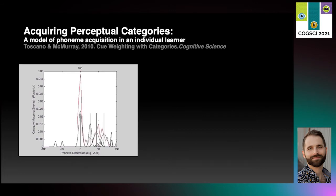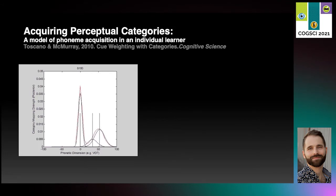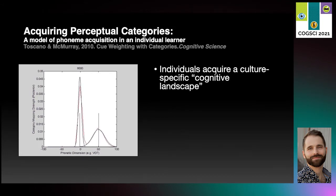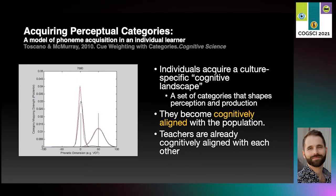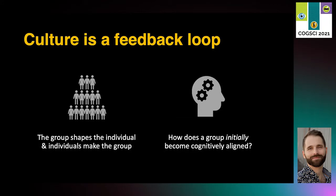We can see the model home in on the correct category structure for the voicing dimension in English, which has two categories. We can think of this process as individuals acquiring a culture-specific cognitive landscape, which can be described computationally as a set of categories that shape perception and production. In other words, individuals become cognitively aligned to their population. But importantly, treating this as an individual-level learning problem assumes that the teachers — the others in the population — are already cognitively aligned with each other. Culture is a feedback loop, and as individuals generate behaviors and artifacts, these shape the cognitive landscapes of others, which can result in a new distribution of behaviors and artifacts in the next generation. So what stabilizes this process, and how do populations become cognitively aligned in the first place?